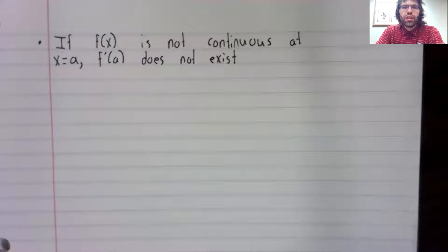There are three main reasons that a function might not be differentiable at a point. The first is if it's discontinuous. If a function is discontinuous at a point, it's not differentiable at that point.